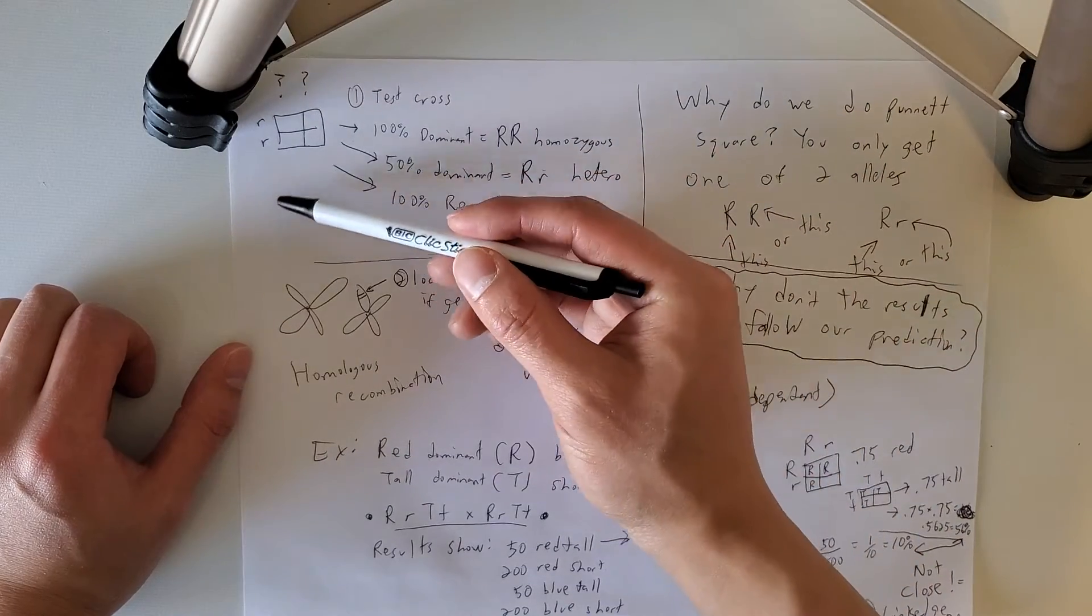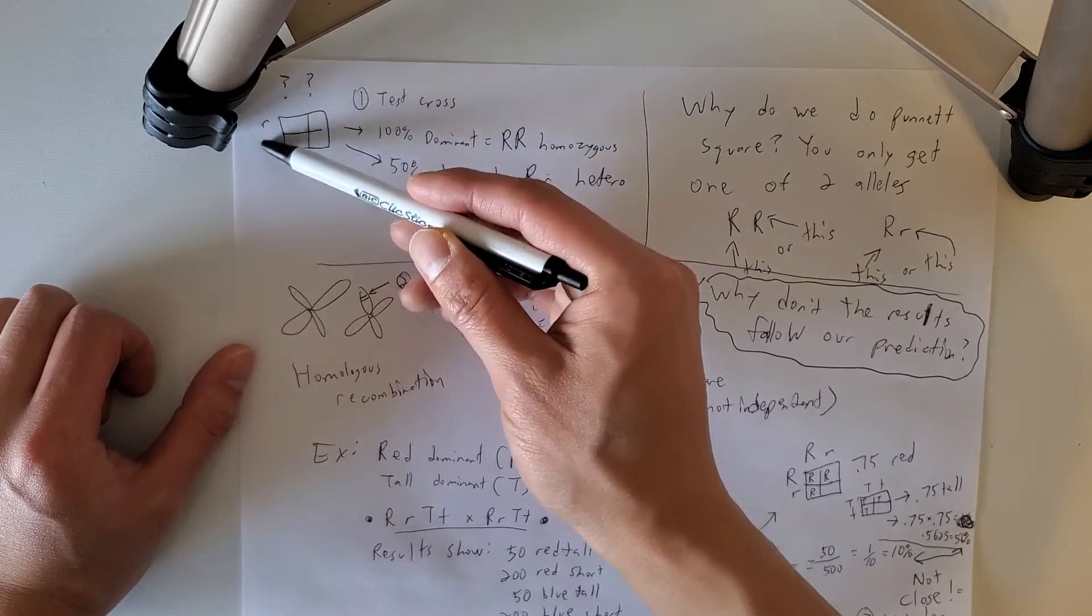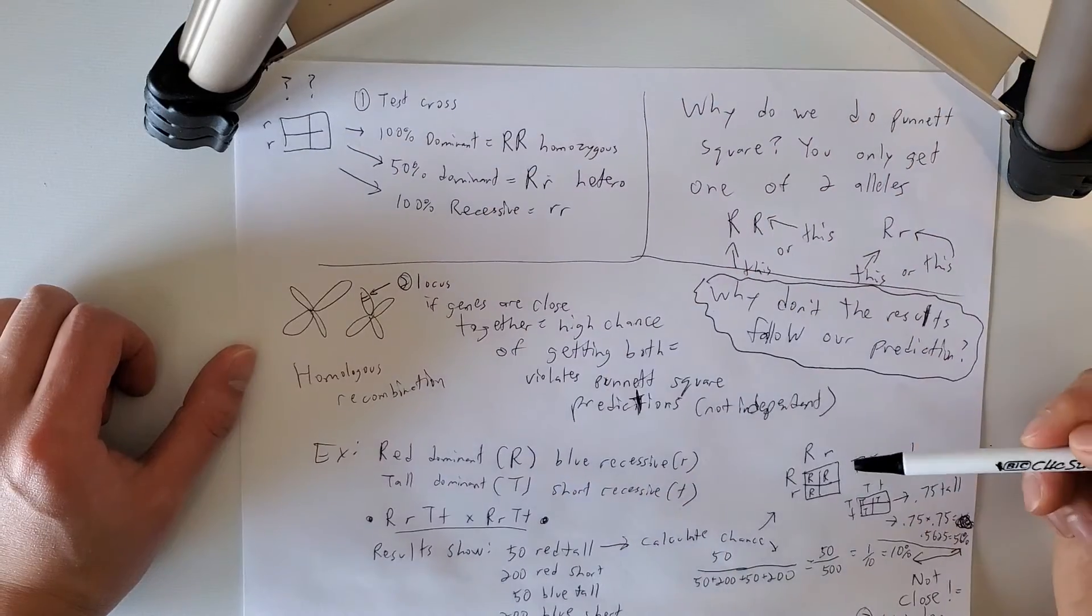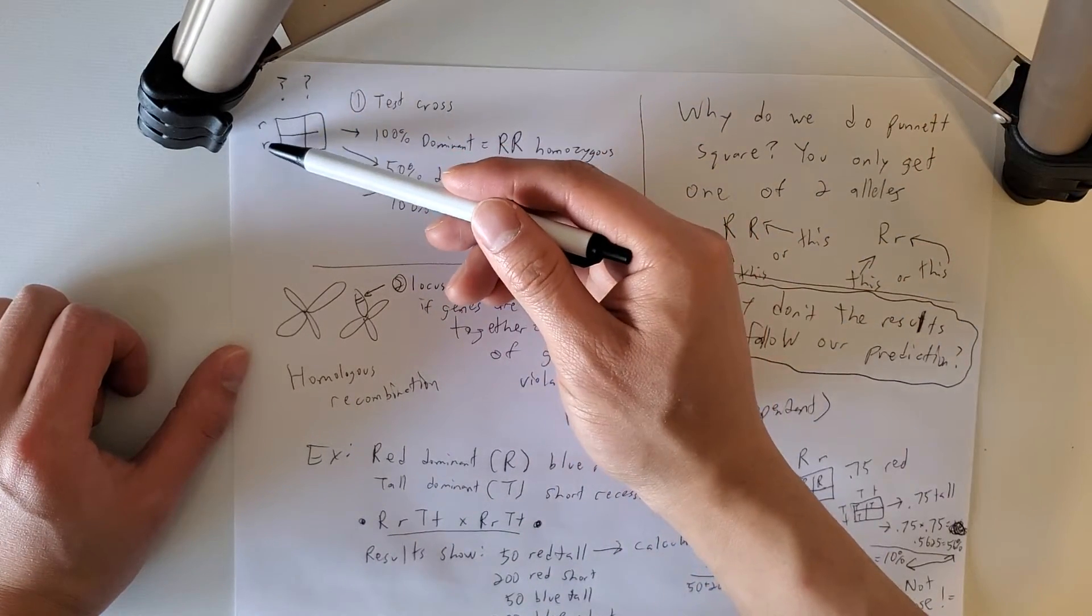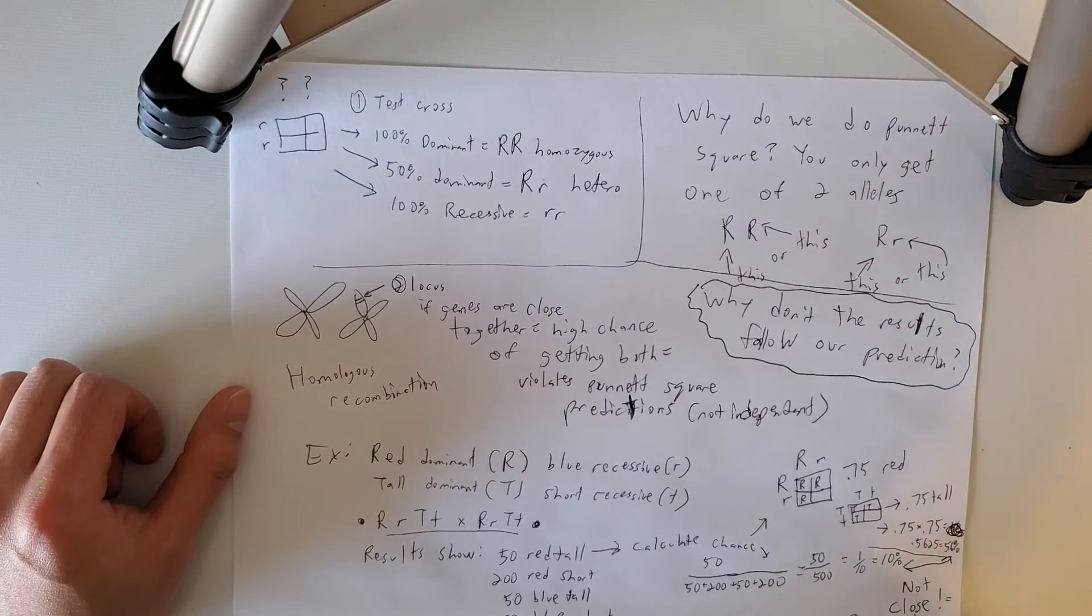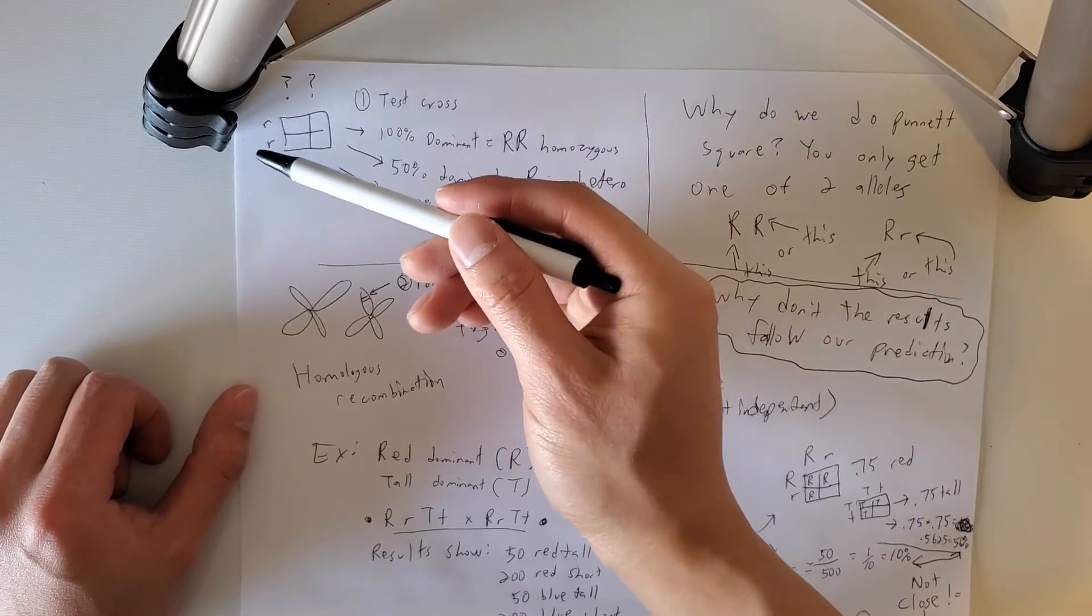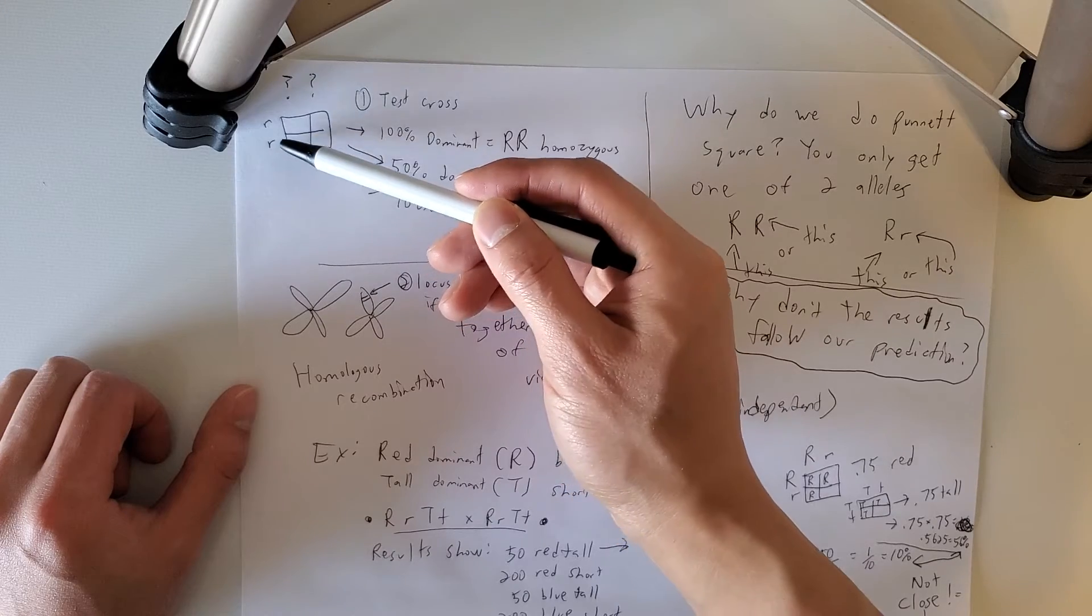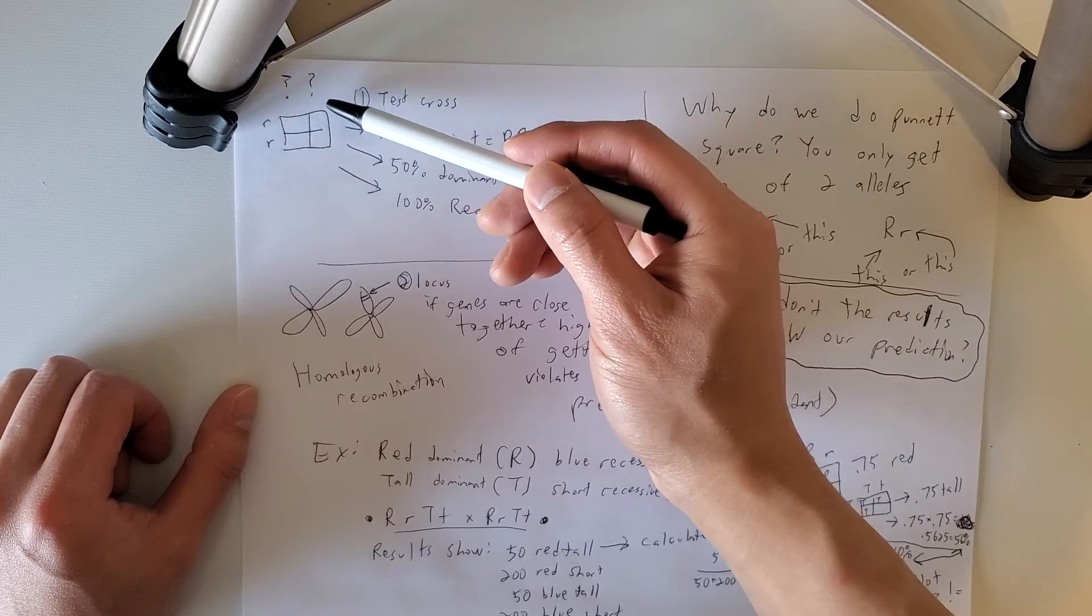So in a test cross, basically you take the unknown parent and you make it have babies with something that's guaranteed to have double recessive. How do you know it has double recessive? Well, if you take the recessives and you keep mating them, and they only produce recessive, then you know that it's definitely homozygous recessive. So you're going to take one parent that is definitely homozygous recessive, they show the recessive trait, and you're going to make it have sex with the unknown parent.